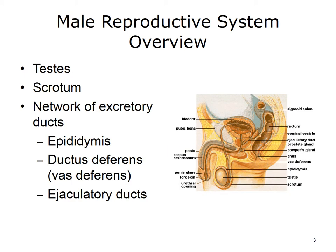Our study of the male reproductive system begins with a review of male anatomy. The male reproductive system produces the male hormone testosterone and sperm for copulation. The testes are two egg-shaped organs inside the scrotum, the loose sack of skin located behind the penis.